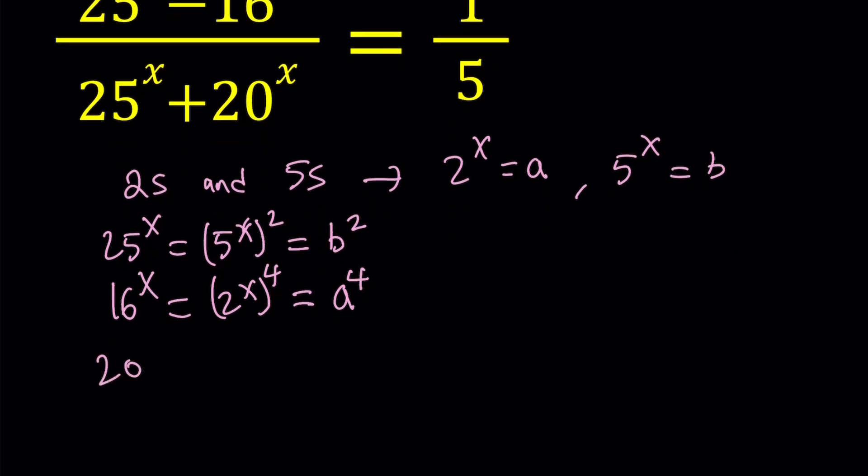And finally, 20 to the power x, since 20 can be written as 2 squared times 5, we can write it like this. And then when we split it up, 2 to the power x squared and 5 to the power x. 2 to the power x is a, so this becomes a squared times b.